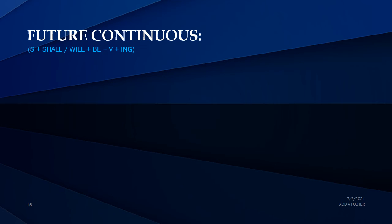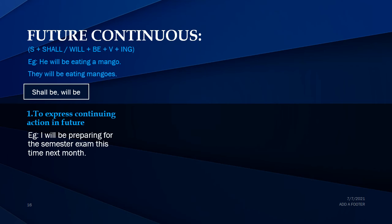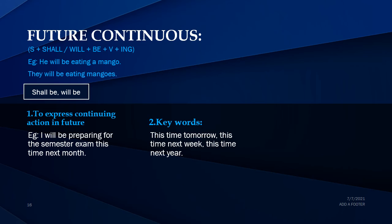The next tense is future continuous tense. The format is: subject plus 'shall be' or 'will be' plus verb plus -ing. For example: 'He will be eating a mango', 'They will be eating mangoes' — the verb 'will be eating' remains the same. The helping verb is 'shall be' or 'will be'. Future continuous tense is used to express a continuing action in future. For example: 'I will be preparing for the semester exam this time next month'. Keywords are: this time tomorrow, this time next week, this time next year.